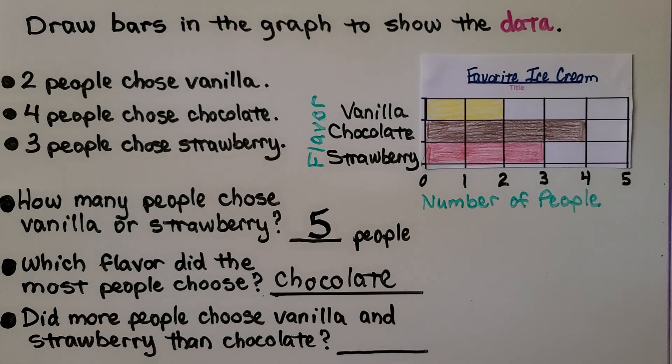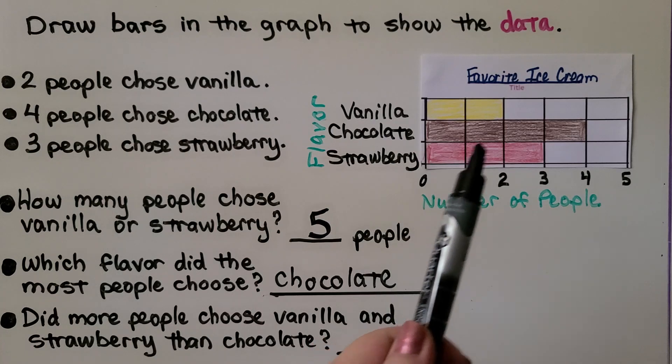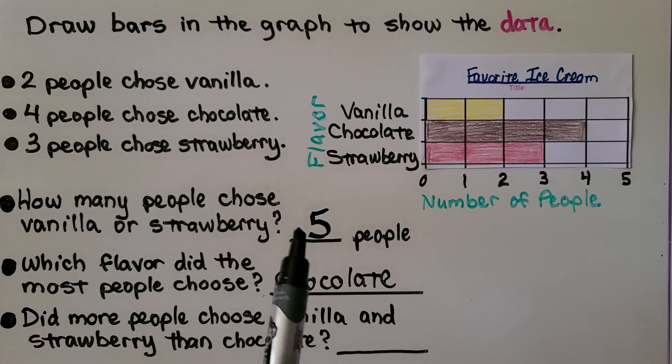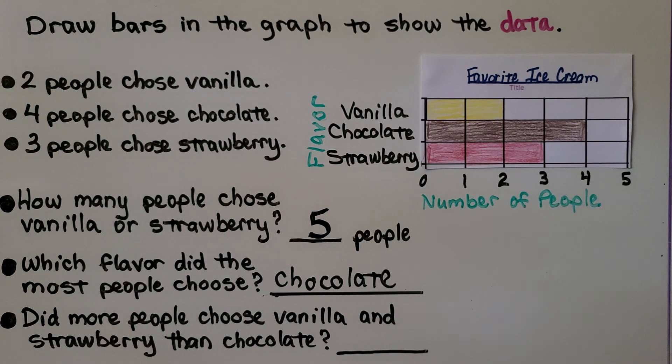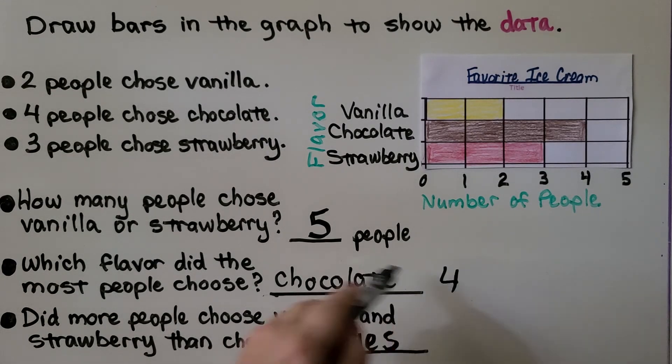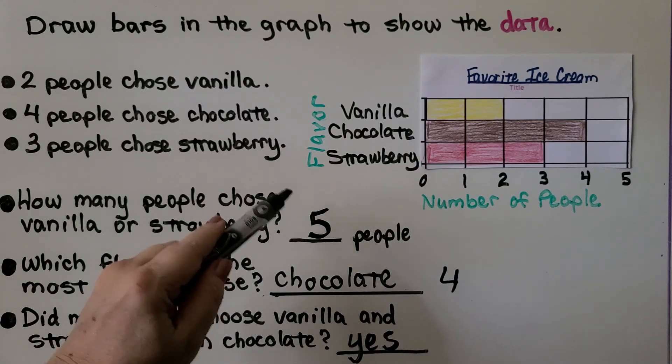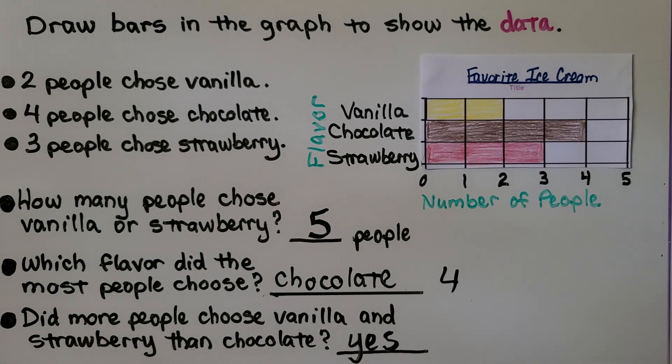And the last question says did more people choose vanilla and strawberry than chocolate? We see chocolate is four. Vanilla and strawberry is five. Did more people choose vanilla and strawberry than chocolate? Yes, they did. Chocolate was four. Vanilla and strawberry is five. That's one more. So yes, more people did choose vanilla and strawberry than chocolate.